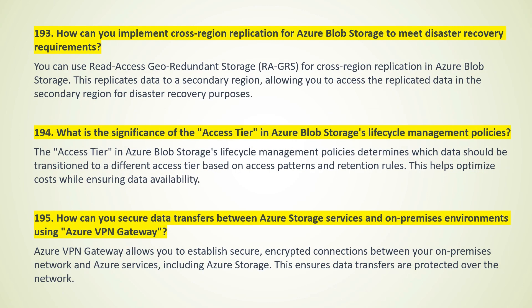How can you implement cross-region replication for Azure Blob Storage to meet disaster recovery requirements? You can use Read Access Geo-Redundant Storage (RA-GRS) for cross-region replication in Azure Blob Storage. This replicates data to a secondary region, allowing you to access the replicated data in the secondary region for disaster recovery purposes.